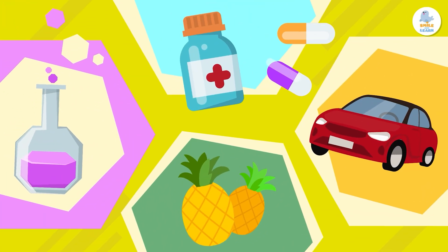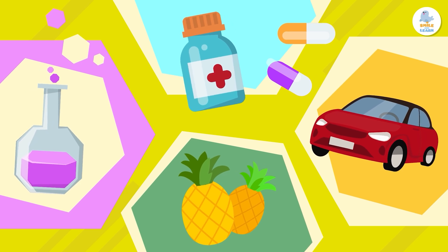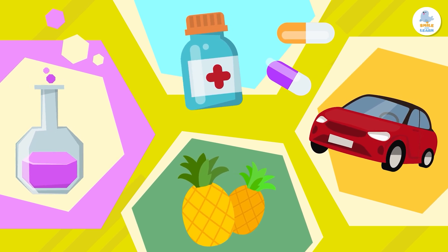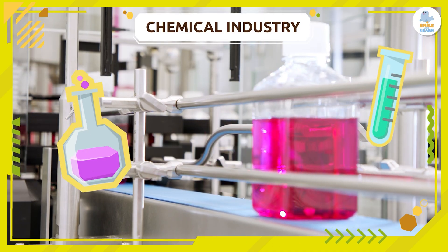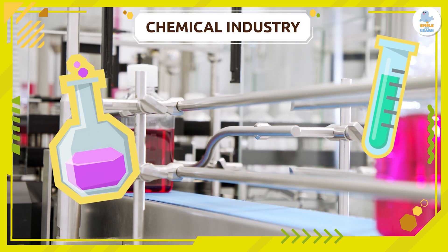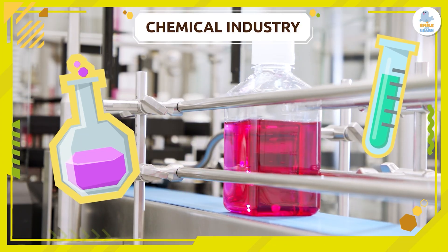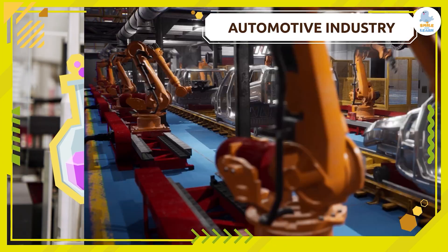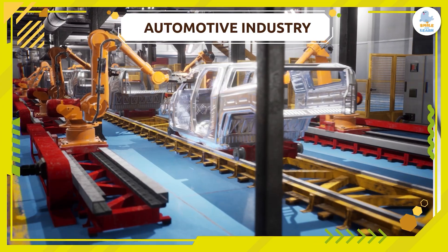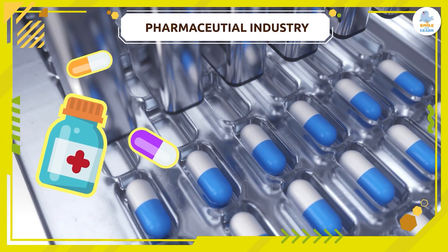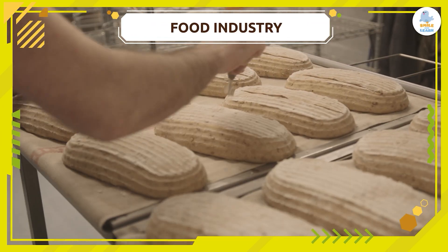We can classify industries by the raw materials they use and the products they manufacture. For example, the chemical industry is responsible for producing plastic, fertilizers, and other chemical products. The automotive industry manufactures motor vehicles. The pharmaceutical industry produces medicines, and the food industry produces food.